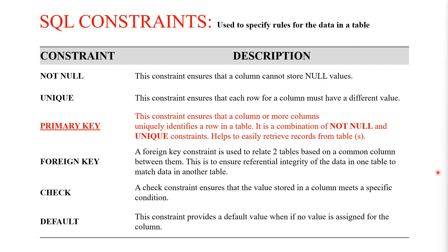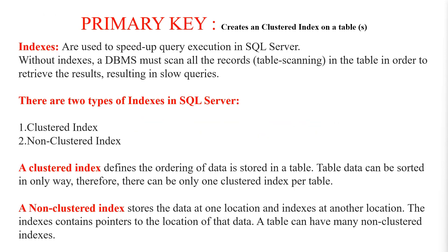When a primary key is specified on a column within a table, it helps to easily retrieve records from that table by creating a clustered index. Every primary key, when created on a table, creates a clustered index. Clustered indexes are important because they help to speed up queries in a database management system.